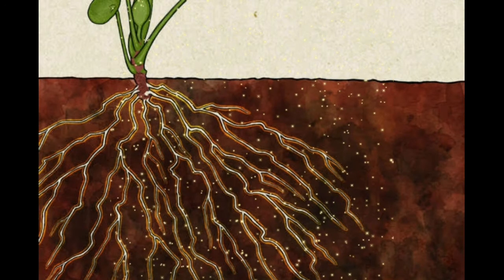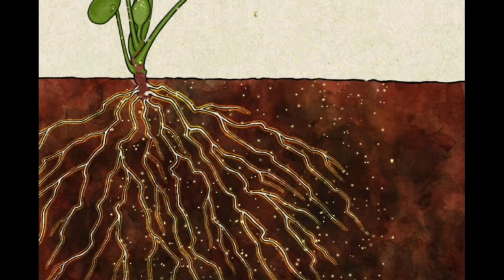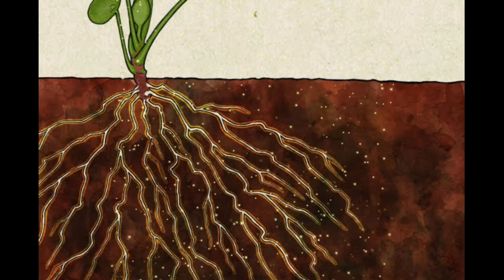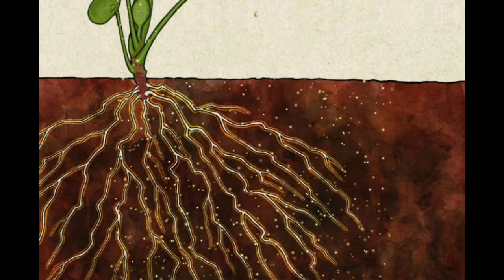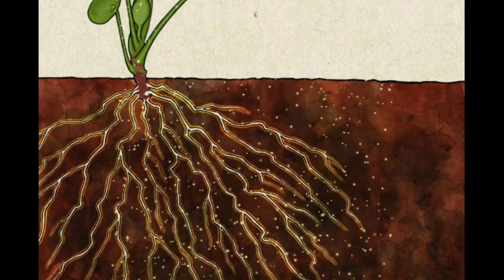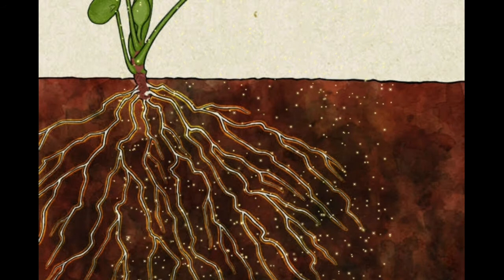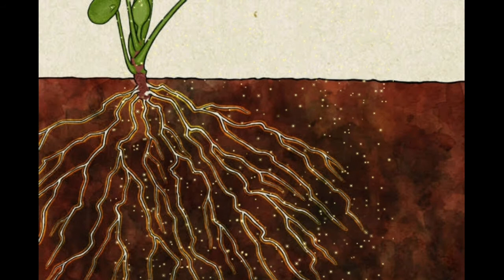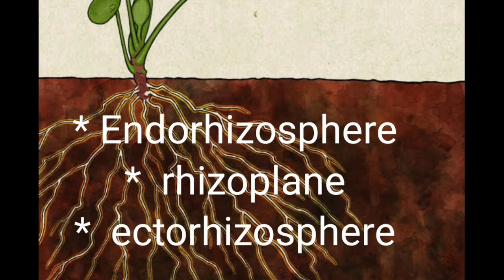Why are microorganisms accumulated in the rhizosphere? Because the rhizosphere has root exudates, that means root secretions. These secretions have many nutrients that are very much needed by the microorganisms. Hence, these microorganisms accumulate around the roots and utilize these nutrients.